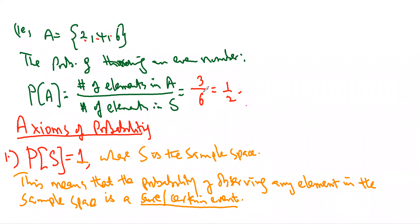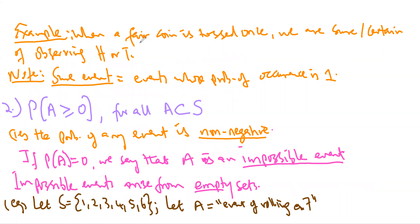The first axiom states that P(S) = 1, where S is the sample space. This means the probability of observing an element in the sample space is a sure event — something guaranteed to happen. For example, if you toss a fair coin once, you are sure to get either a head or a tail. Similarly, rolling a die once, you are sure to get one of 1, 2, 3, 4, 5, or 6.